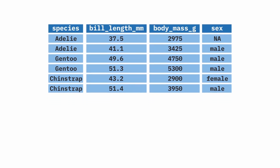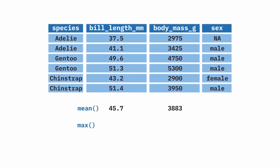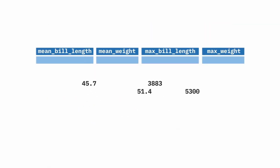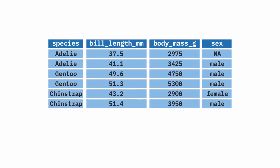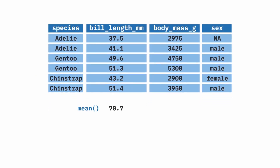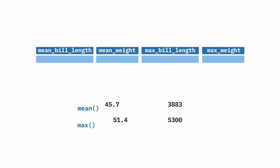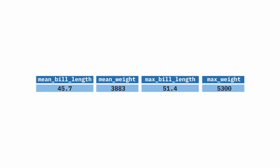The next function we're going to cover is summarize. As you might guess from the name, this allows us to create summaries of our data. As you can see in this animation, summarize allows us to create a summary — we can do things like calculate means of variables, or max, or minimum, or any number of other types of summaries.